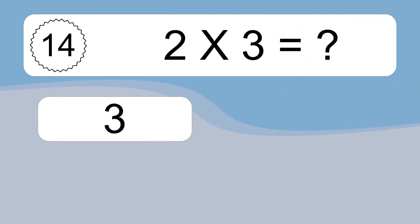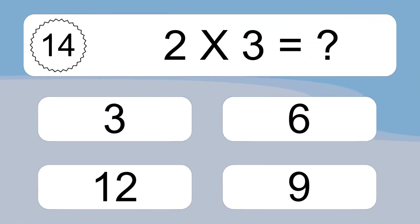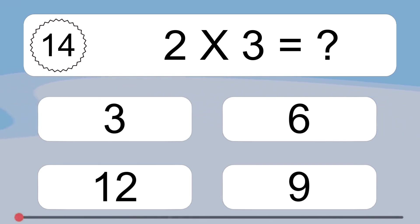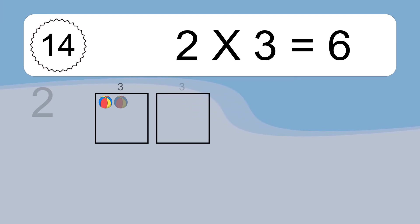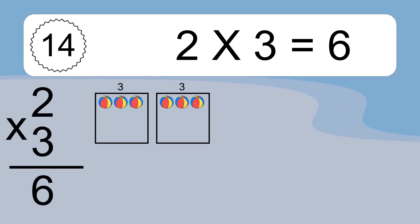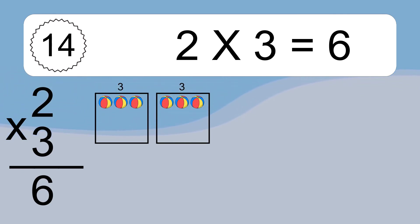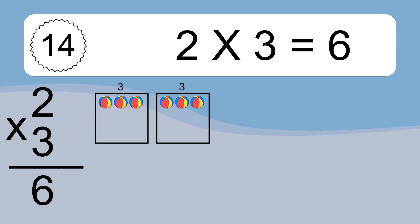2 times 3 equals what? 2 times 3 equals 6. We have 2 boxes, and each box has 3 colorful balls inside. If you count all the balls in all the boxes together, you will have 2 times 3 balls. This equals 6 balls.